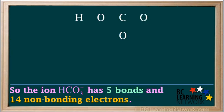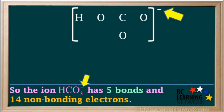We arrange the ion so that the most electropositive atom other than hydrogen, which is carbon, is in the center of the ion. So this is a probable structure. When we're dealing with an ion, we put square brackets around the ion, and the charge on the ion, negative one, is shown on the top right just outside the brackets.